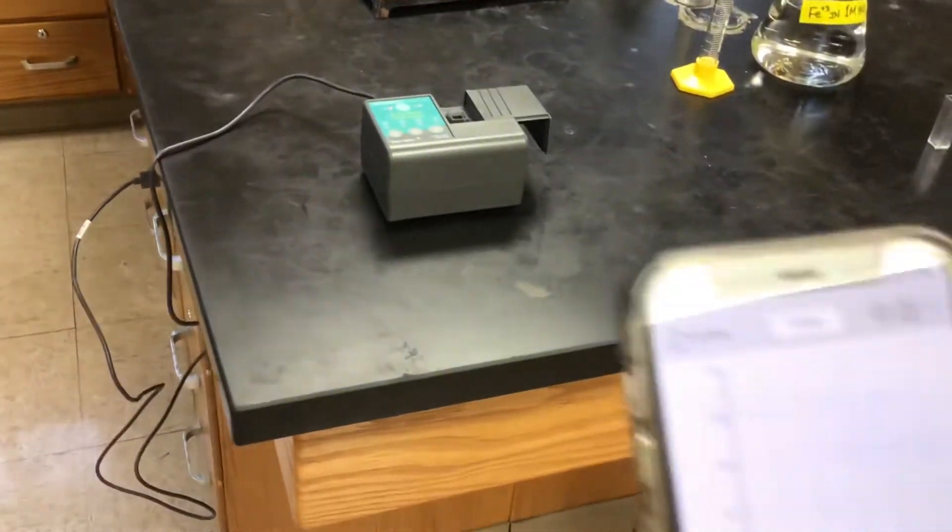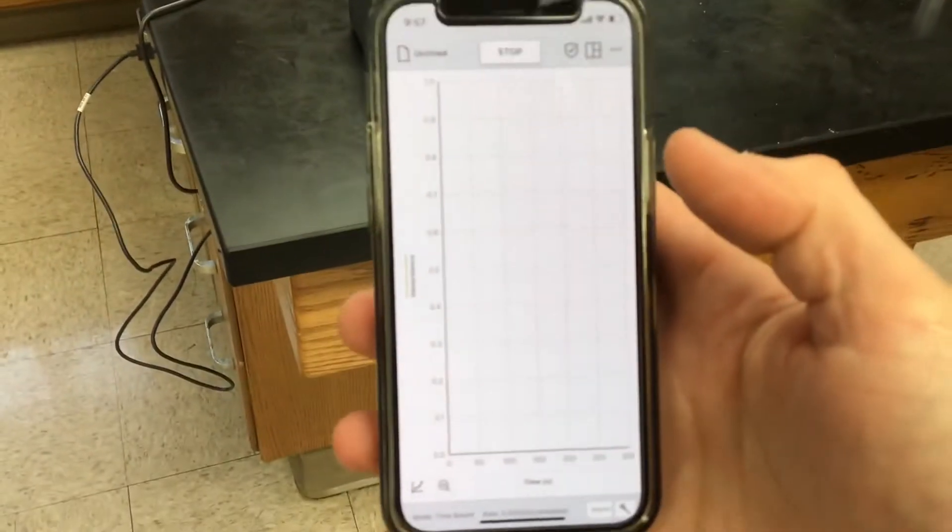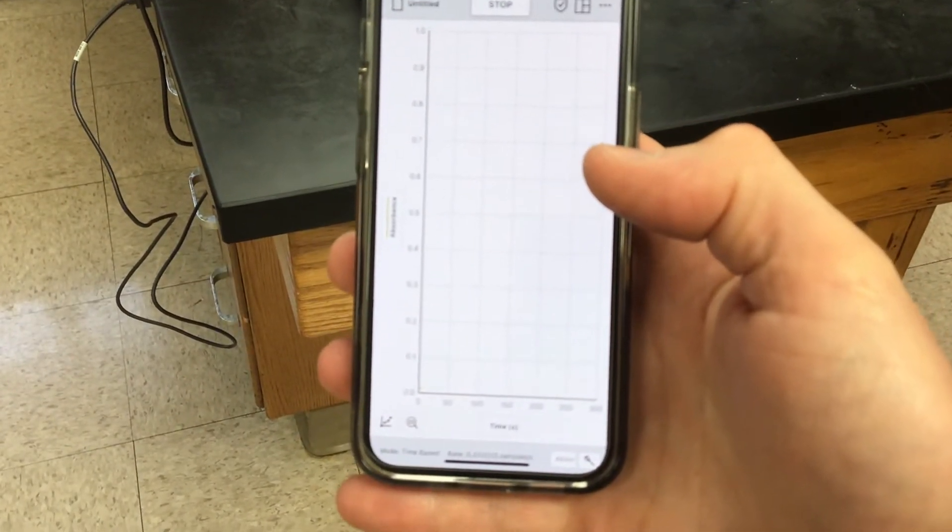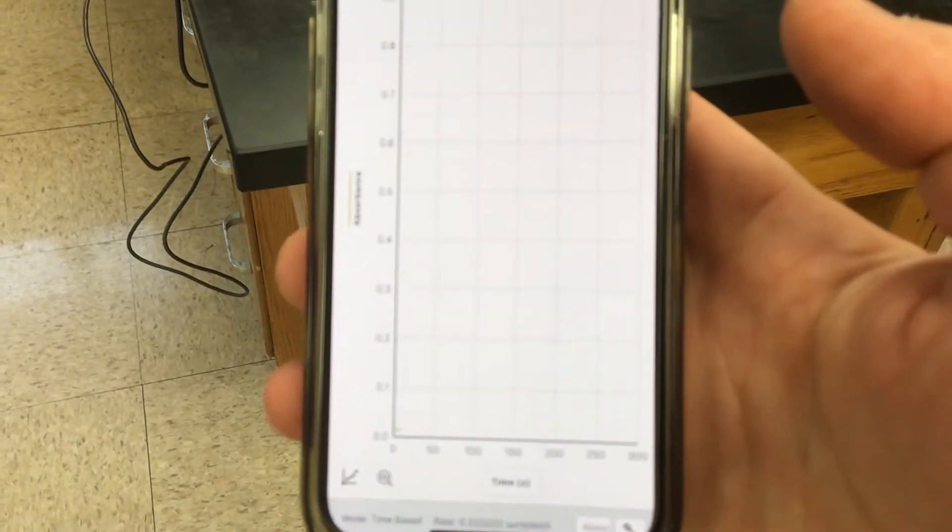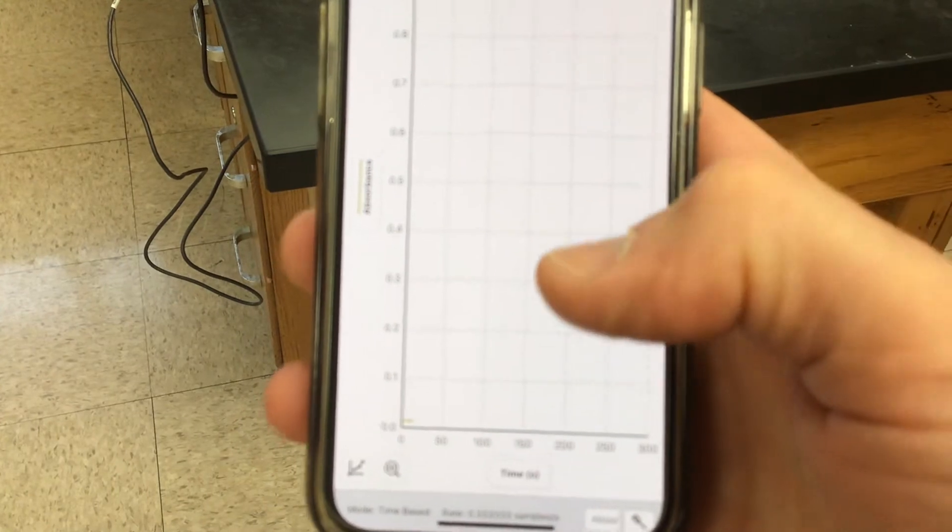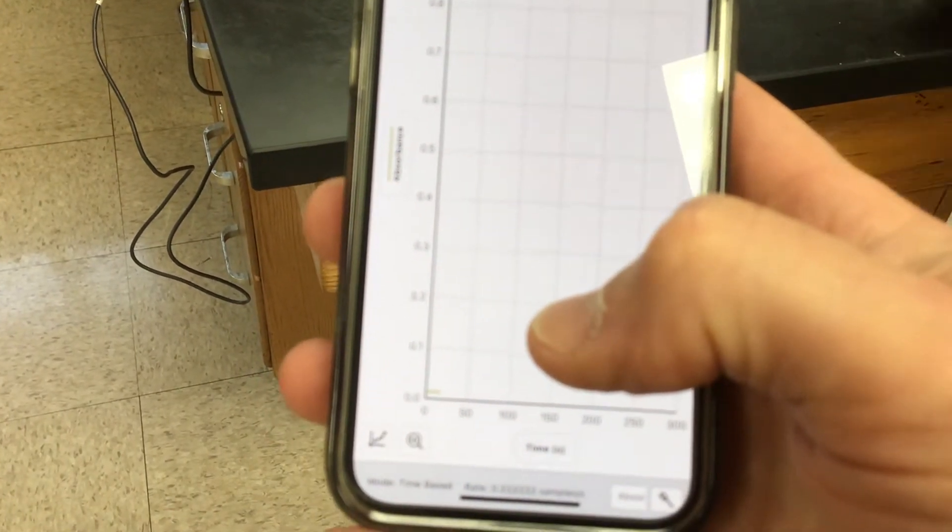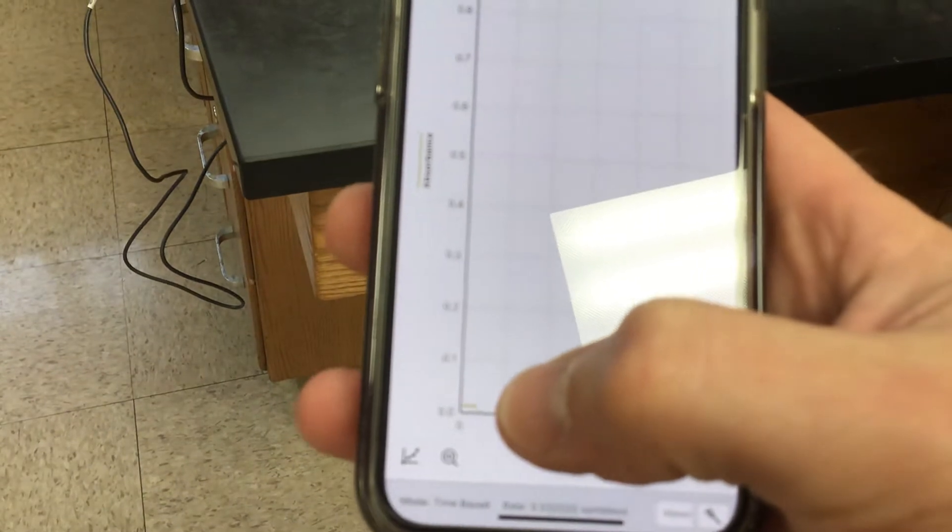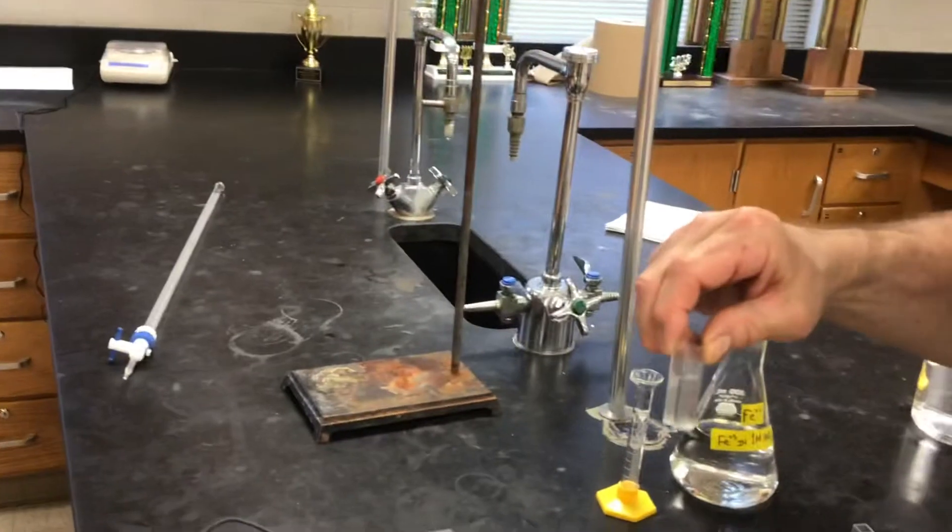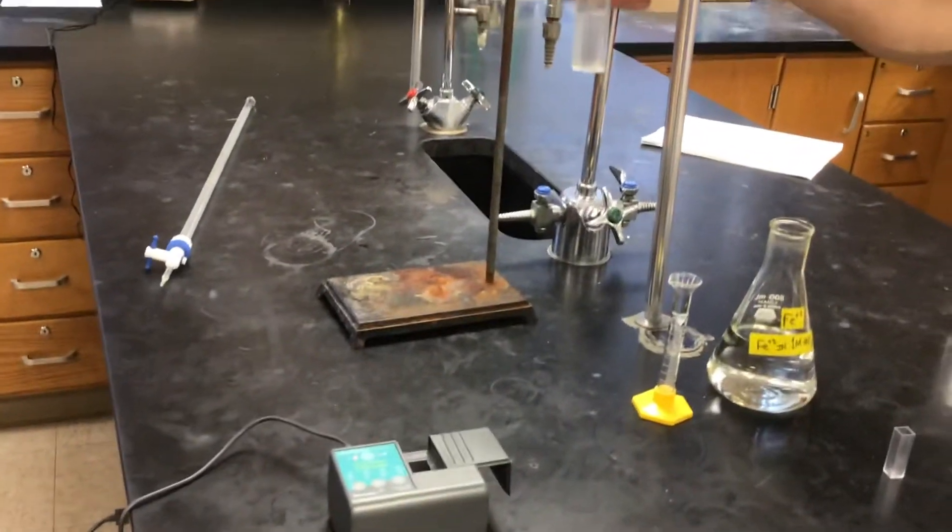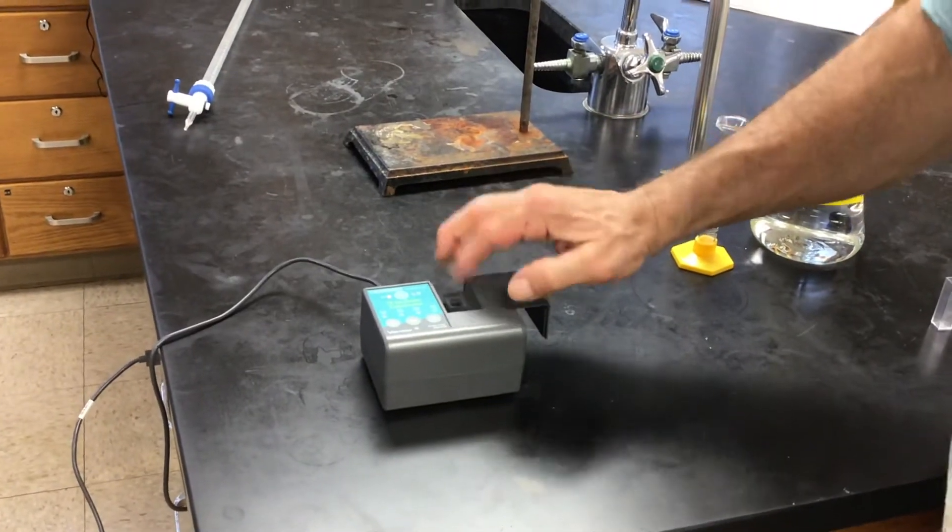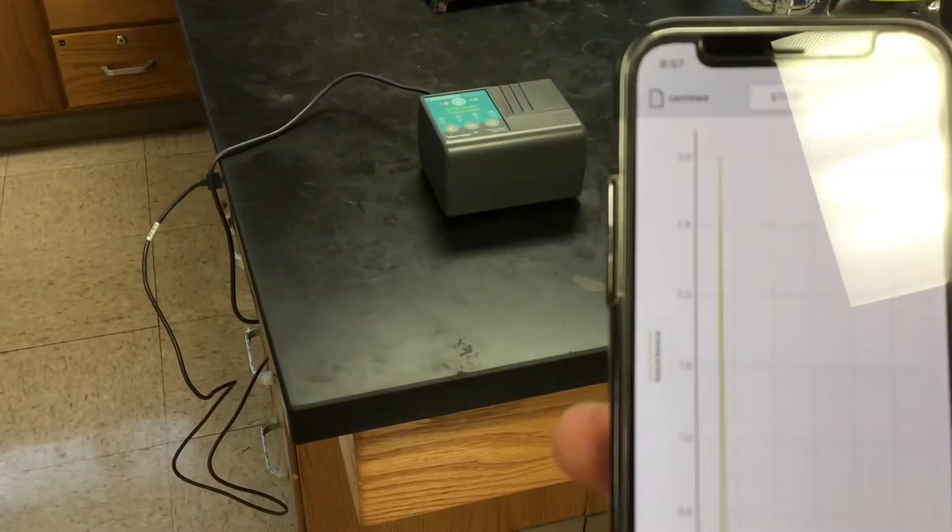If I'm collecting the data here, you can't see anything right now because it's not focused. Oh, looks like maybe we have to tell it to set a blank again. So here's the blank. It's just the DI water in the cuvette. So we'll drop it in and we'll close the door. And press the cal there in the middle.